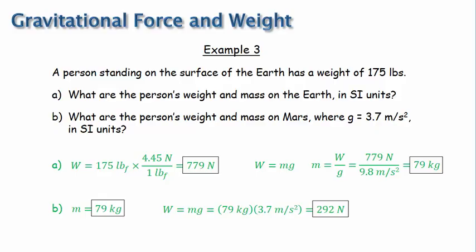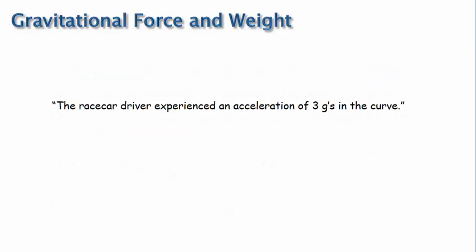The last thing I'd like to mention is that acceleration is sometimes given in terms of g, or multiples of g. You've probably heard a phrase like this before. The race car driver experienced an acceleration of 3 g's in the curve. That simply means that the driver's acceleration is 3 times g, where g is understood to be 9.8 meters per second squared. So the driver's acceleration is 29.4 meters per second squared. Well, that's it for this video. See you in the next one.